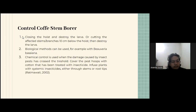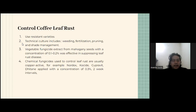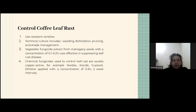Control of coffee upas fungus or pink disease: first, reduce humidity through burning and setting strategies; third, using copper-based fungicides such as Nordox to profit or to demorphic fungicide; fourth, eradication by collecting or burying diseased fruit; fifth, using resistant varieties; second, technical culture including weeding, fertilization, pruning, and shade management; third, vegetable fungicide extract applied at a concentration of 0.1% to 0.2% per week.